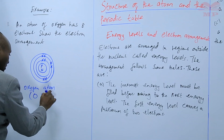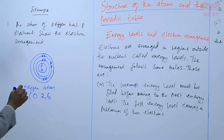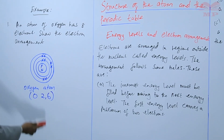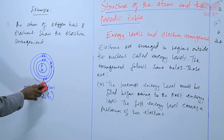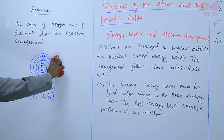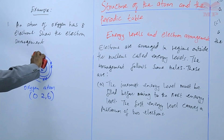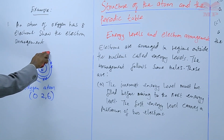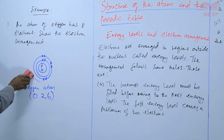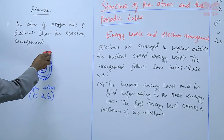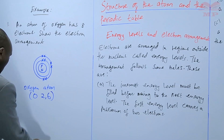Six electrons in the second energy level. Note that we cannot have an energy level without electrons — an energy level must be occupied with electrons. This shows the complete atom of oxygen, written as 2, 6.